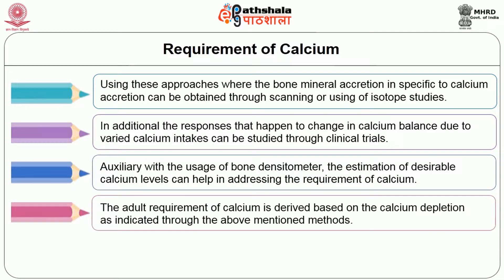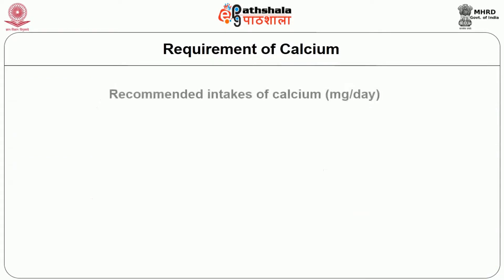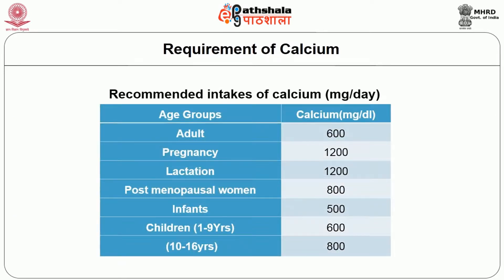The adult requirement of calcium is derived based on calcium depletion. The earlier depletion of calcium levels in women owing to repeated pregnancy, lactation, and menopause requires separate requirement derivation, noted through frequent fractures. The recommendations include around 600 mg per day for an adult, 1200 mg per day during pregnancy and lactation, and 800 mg per day for postmenopausal women. For infants and children, the requirement is around 500 mg per day for infants, 600 mg per day for children aged 1 to 9 years, and 800 mg per day for children aged 10 to 16 years.